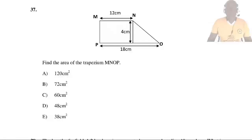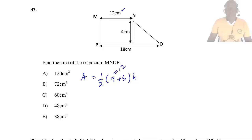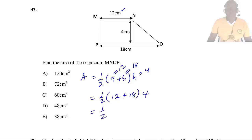Question 37: Find the area of trapezium MNOP. Area = ½(A + B) × H, where A and B are the parallel sides and H is the height. A = 12, B = 18, H = 4. Area = ½ × (12 + 18) × 4 = ½ × 30 × 4 = 60 cm². So the answer is C.